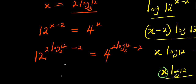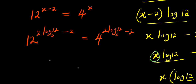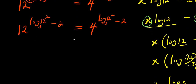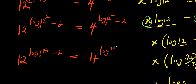From here, moving the 2 inside the exponent using the power property, we have 12 to the power of (log 12 squared to the base of 3 minus 2) equals 4 to the power of (log 144 to the base of 3). Using the identity a to the power (n minus m) equals a^n divided by a^m, and noting 12 squared equals 144, we get 12 to the power of (log 144 to the base of 3) minus 2.